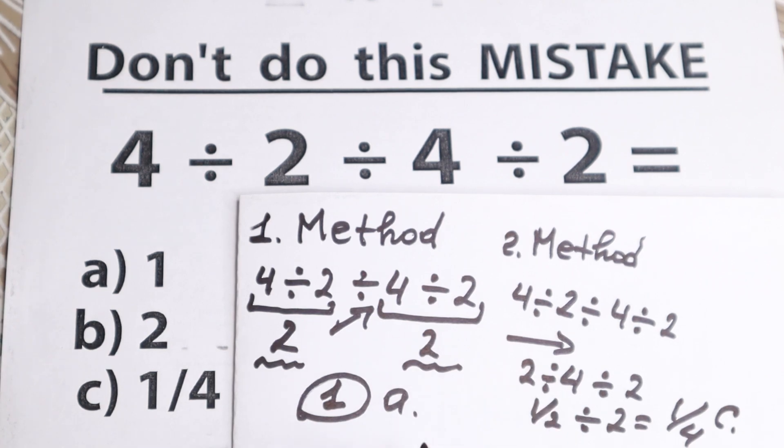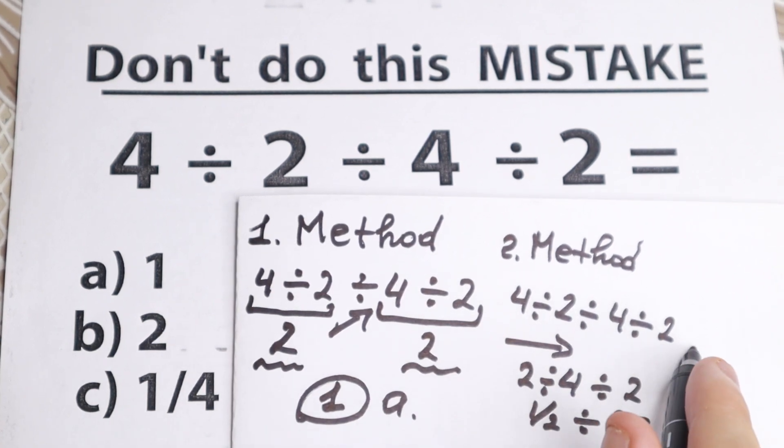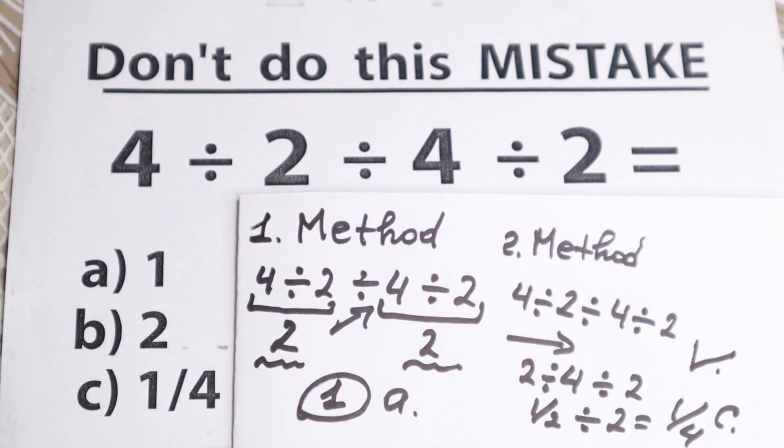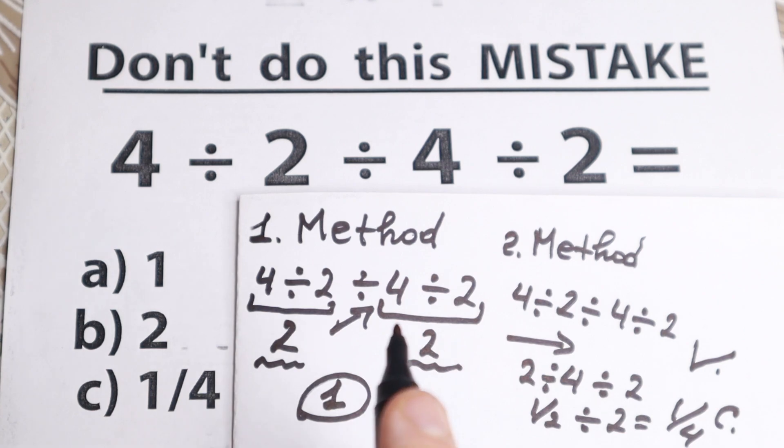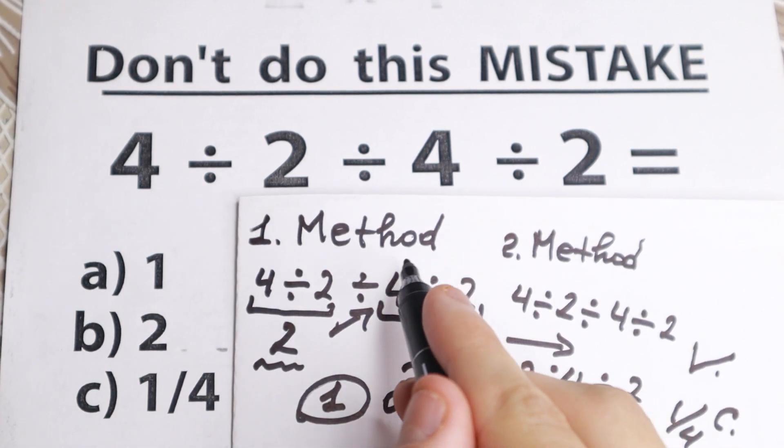But what about the answer? We have two methods, and we have this option A, right here option C. Which one is absolutely correct? The second method is absolutely correct. Because if we go in this method, we cannot go in this way.